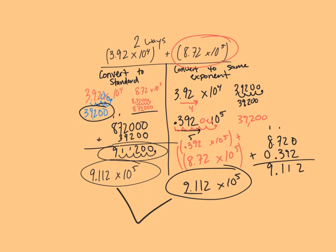As we zoom back out, it was the exact same answer that we got with the other method as well. So we have two different ways: we could have converted to the same exponent — here I had them both as 10 to the fifth — or we could convert them both to standard notation, add them, and then convert back. Next one we're going to take a look at is a subtraction problem, and we're going to look at the exact same ways: converting to standard, or converting to the same exponent, but this time with subtraction.